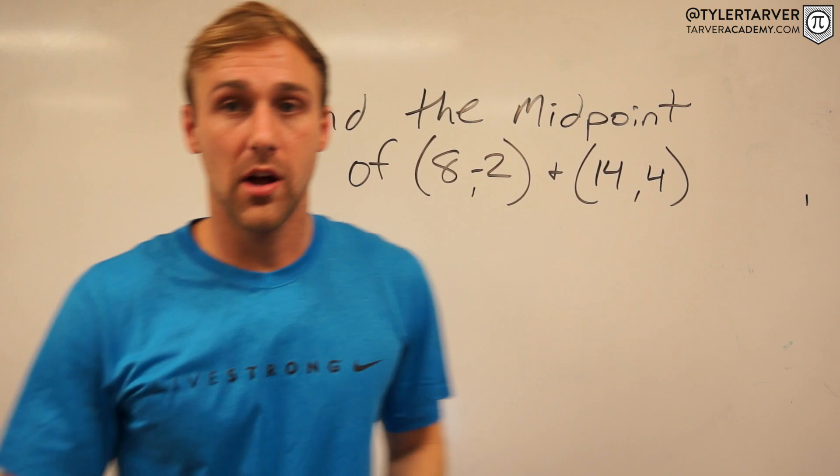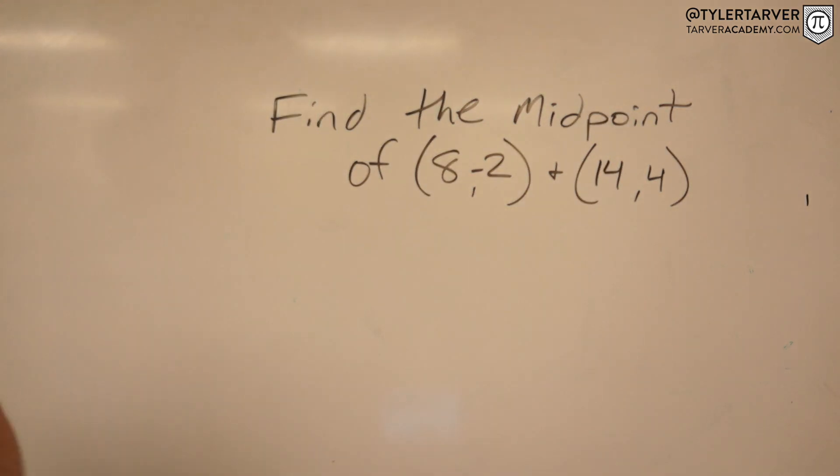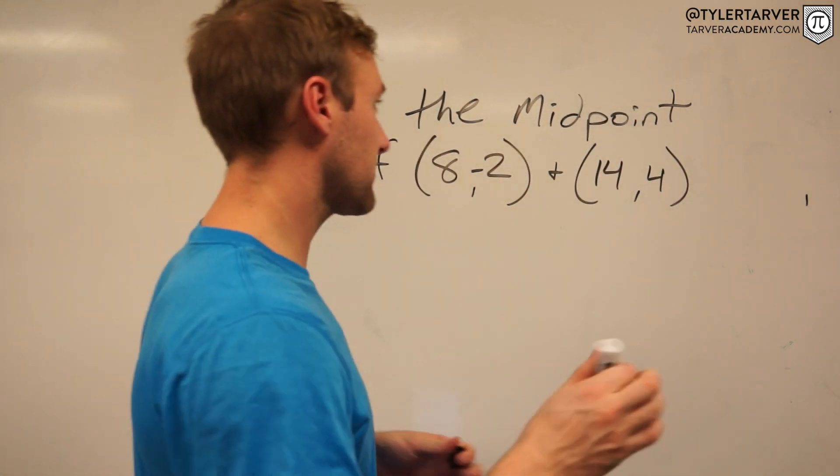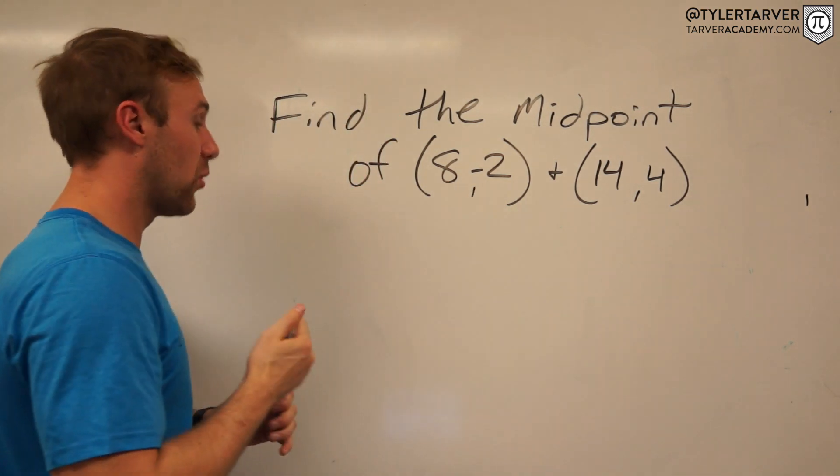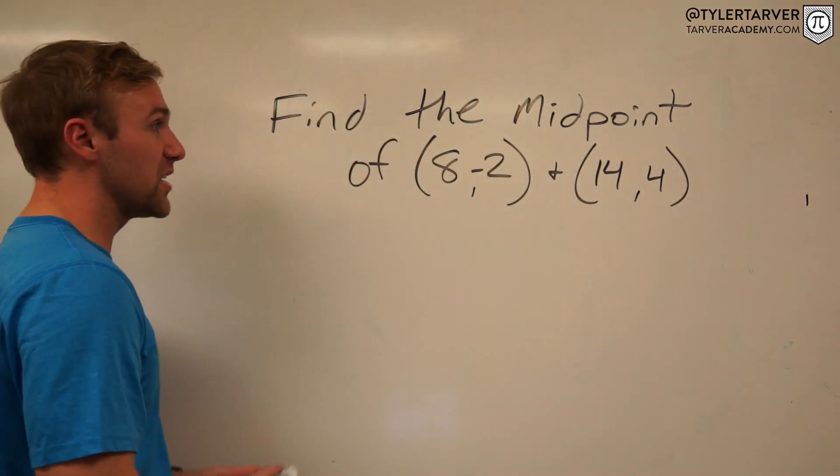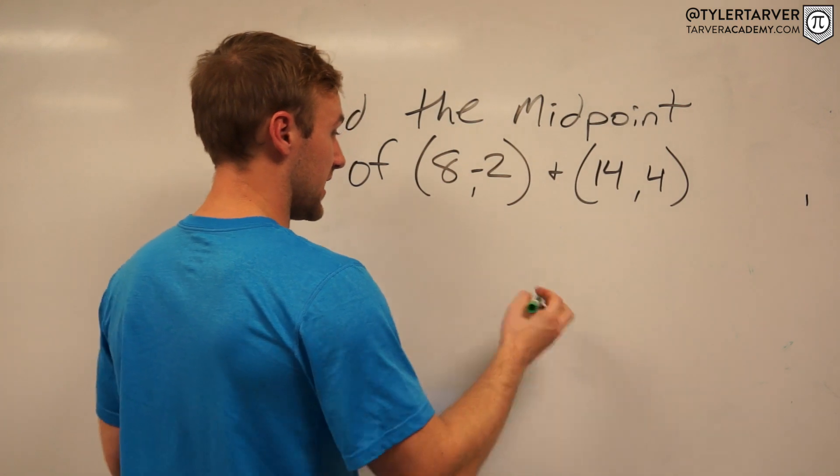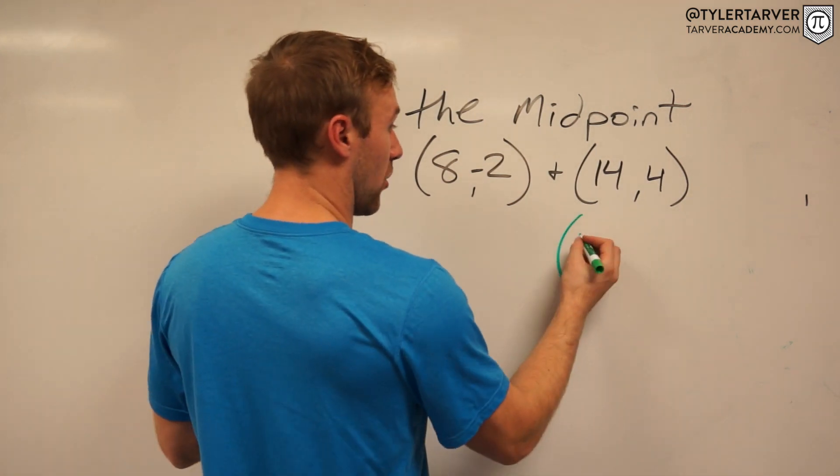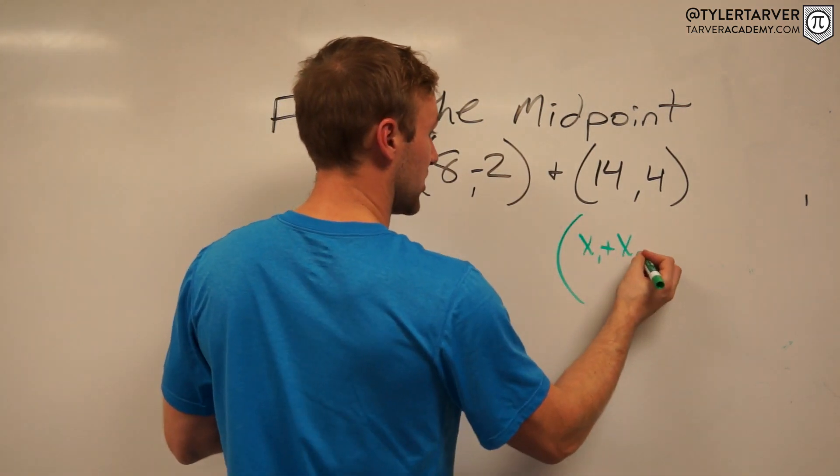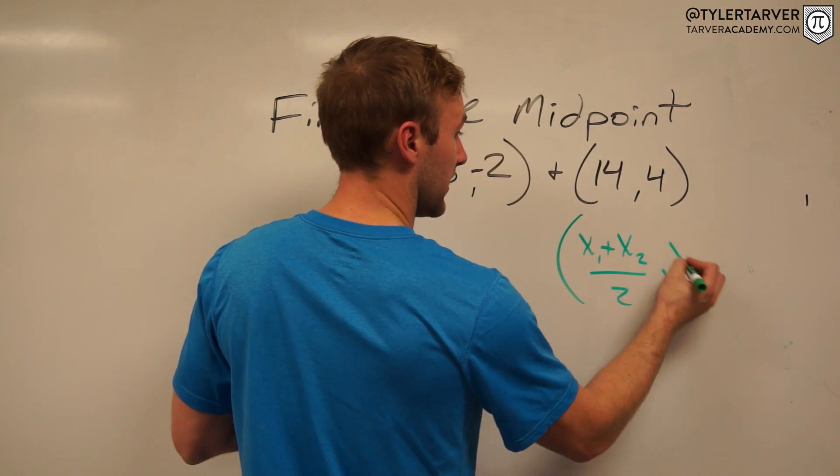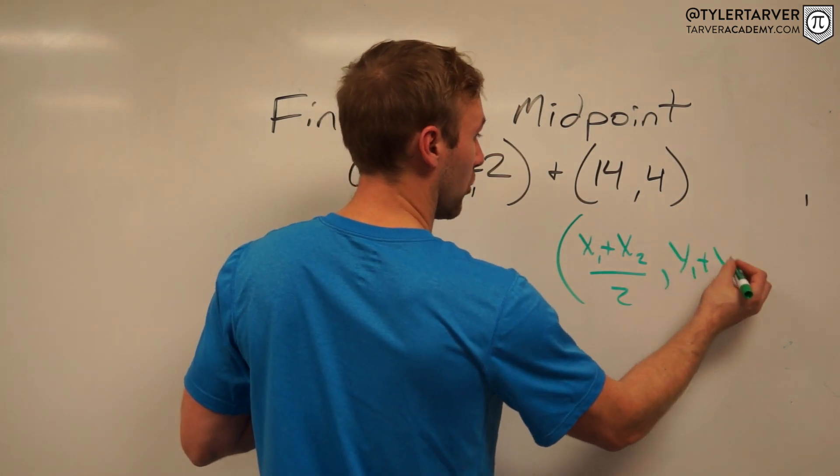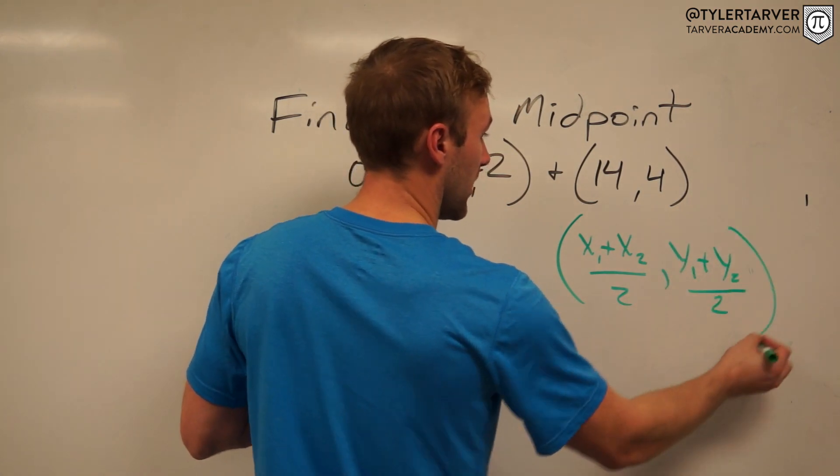Okay, so thank you for pausing it, thank you for working it. Let's see if we got the same answer. Now, the equation for midpoint is you want to take your x1 plus x2 divided by 2, and then you want your y1 plus y2 divided by 2.